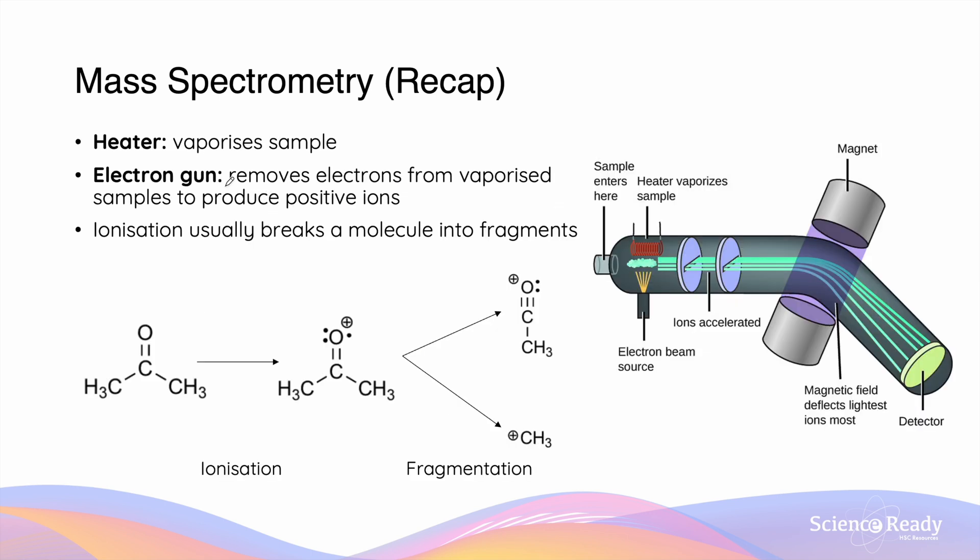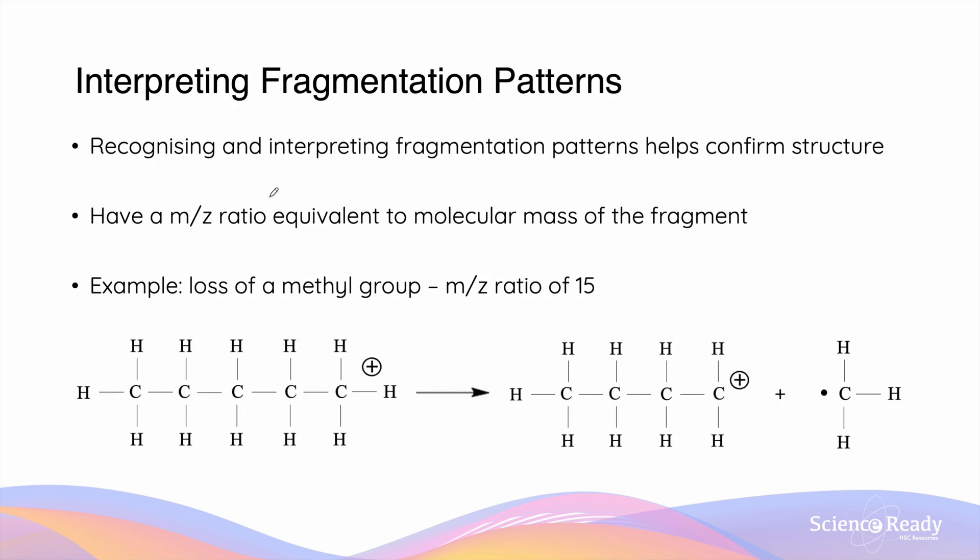The way that the mass spectrometer works is that a heater will vaporize the sample. This is then ionized by an electron gun, which removes electrons from that vaporized sample to produce positive ions. Usually, ionization will break the molecule into different fragments. These fragments will then produce their own signals in the mass spectrum. By recognizing and interpreting the fragmentation patterns, we can utilize that information and confirm the structure of a suspected compound.